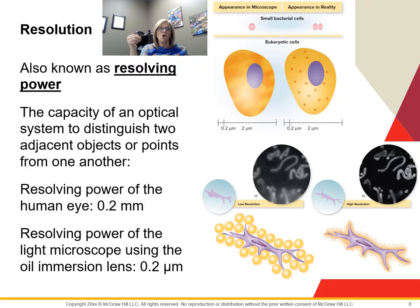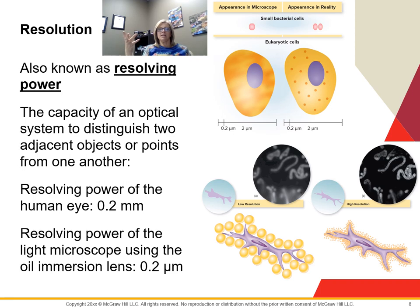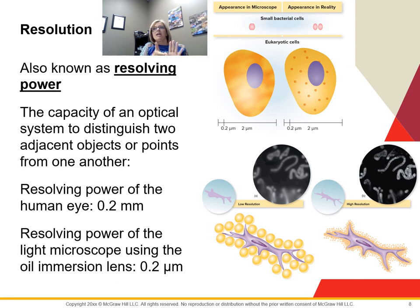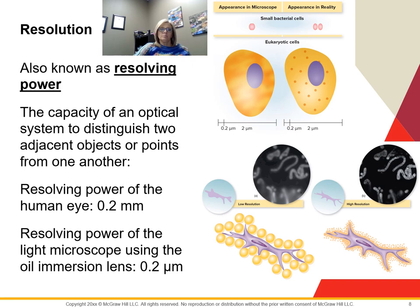Resolution, or resolving power, is what allows something to distinguish two points in an object from each other — basically how clear or fuzzy is the picture. As you look at a slide, you can roll the fine adjustment knob back and forth because cells are 3D objects, which can bring different things into focus — useful when trying to see flagella or specific parts of a cell. The resolving power of your eyes is 0.2 millimeters; the resolving power of the light microscope is 0.2 micrometers.